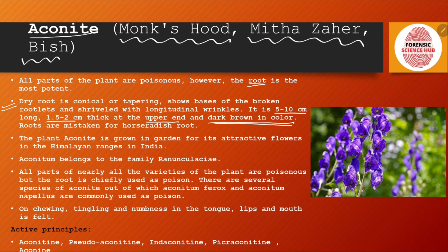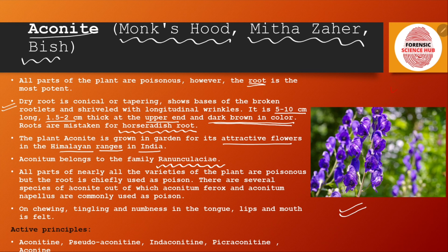The roots might be mistaken for horseradish root, so they can be confused with each other. The Aconite plant is grown in gardens for its attractive flowers and is found in the Himalayan ranges in India. It belongs to the family Ranunculaceae. All parts of the plant are poisonous, but the root is chiefly used as a poison.